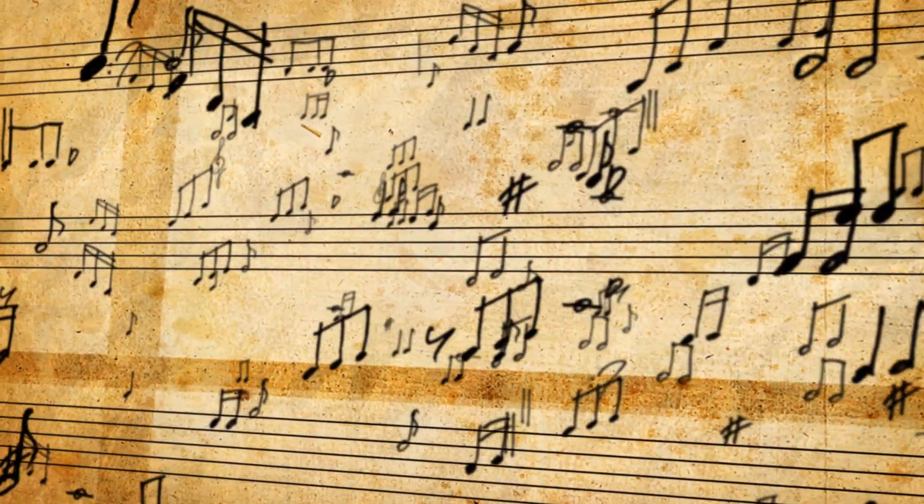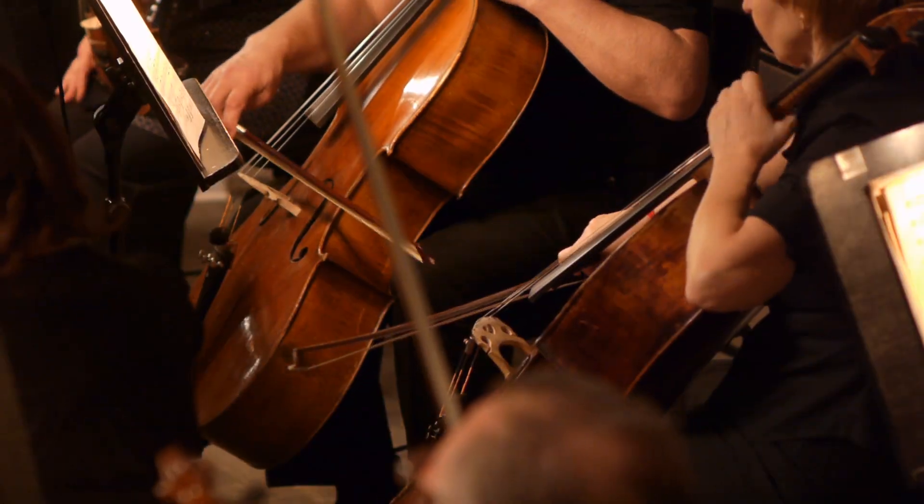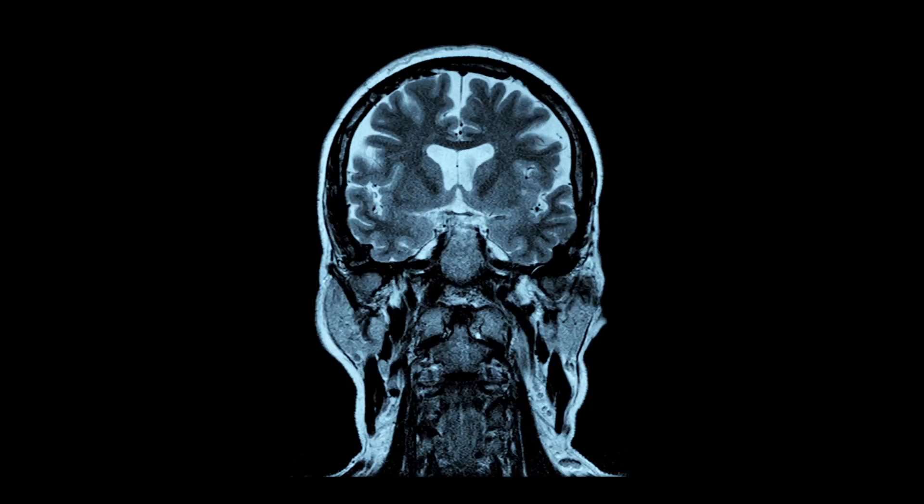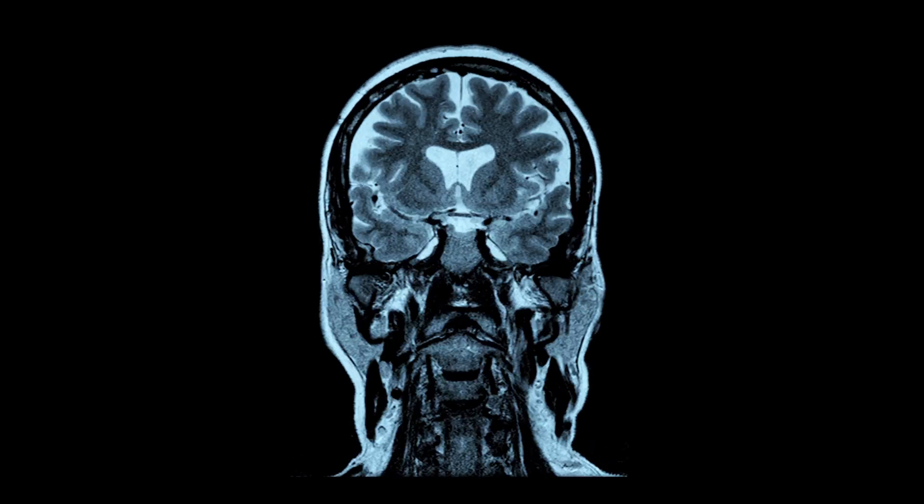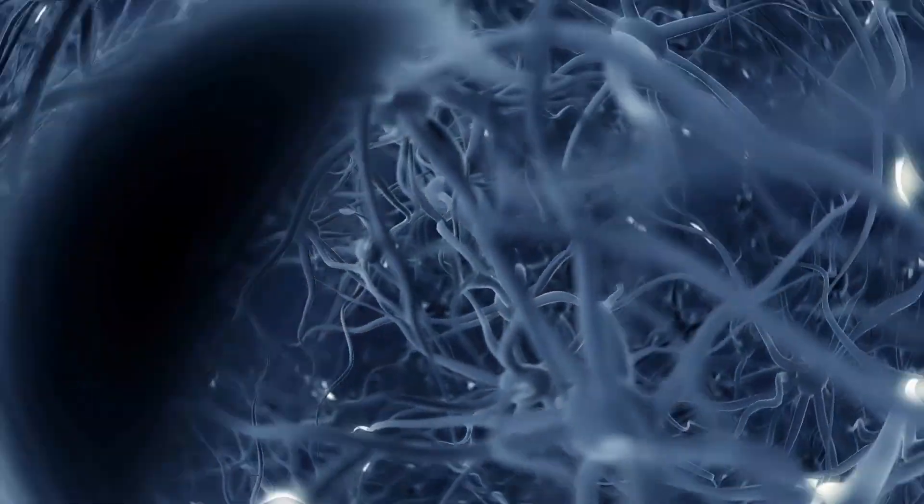You see, when it comes to recognizing visual images or a style of a piece of music, the natural architecture of a human or even an animal brain is at a huge advantage. So, what if we could make computers think more like brains?